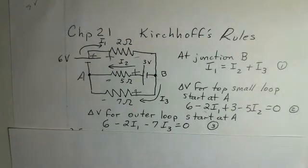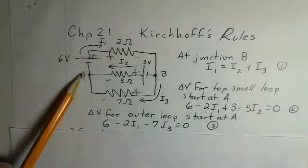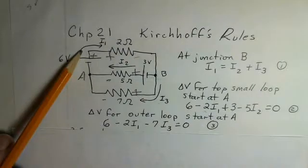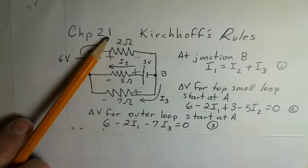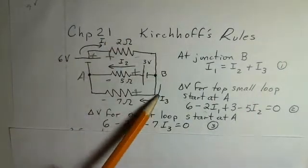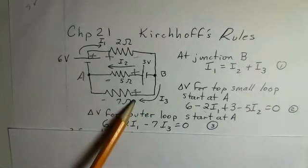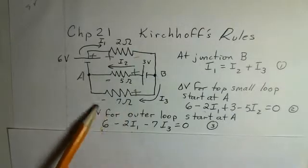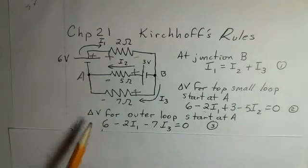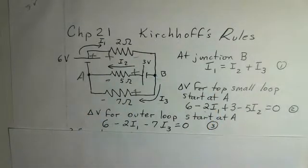I'm going to do the outermost loop so start here at point A, up 6 volts, minus 2 times I1 for that voltage drop, and then going on the outside now there's no battery in this bottom loop for this problem but I would have another voltage drop here, a minus 7 I3 to account for. Now I have three equations and three unknowns.